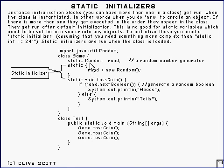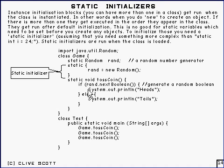Here's a simple example. There's a random number generator there called rand, and it's created as static — so just one of them is created. And a method here called tossCoin gets the next boolean, and if it's true it prints out 'heads,' otherwise it prints out 'tails' if it's false.